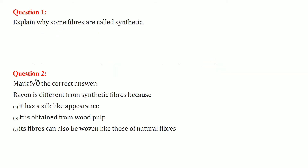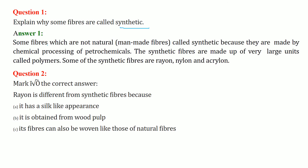First question: explain why some fibers are called synthetic. They are called synthetic because they are man-made and not naturally occurring. These fibers, which are not natural, are known as synthetic because they are made by chemical processing of petrochemicals. These synthetic fibers are made up of very large units of polymers. Examples are rayon, nylon, and acrylene.